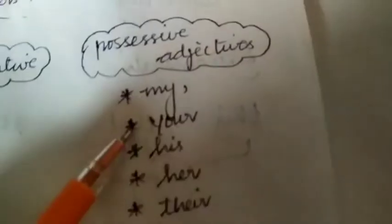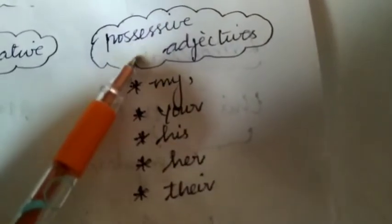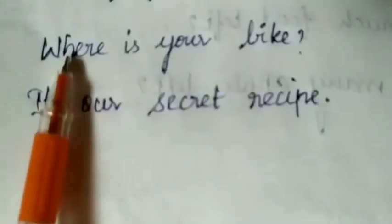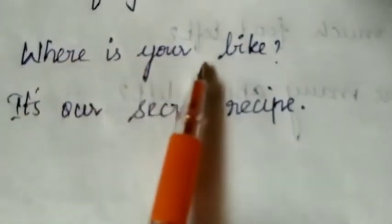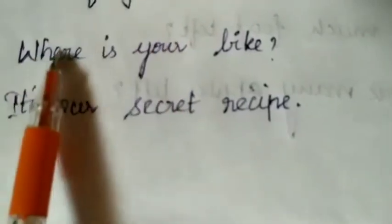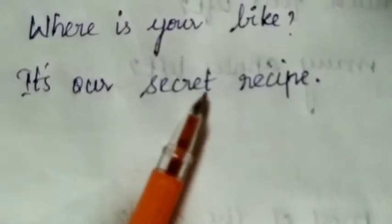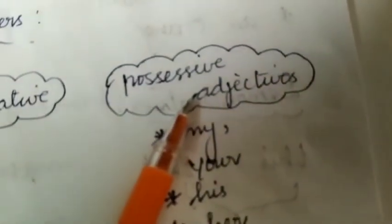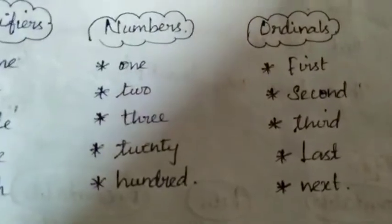Next: Possessive adjectives. The words under possessive adjectives are: my, your, his, her, their. For example: 'Where is your bike?' and 'It's our secret recipe.' Possessive pronouns are words used to show ownership.